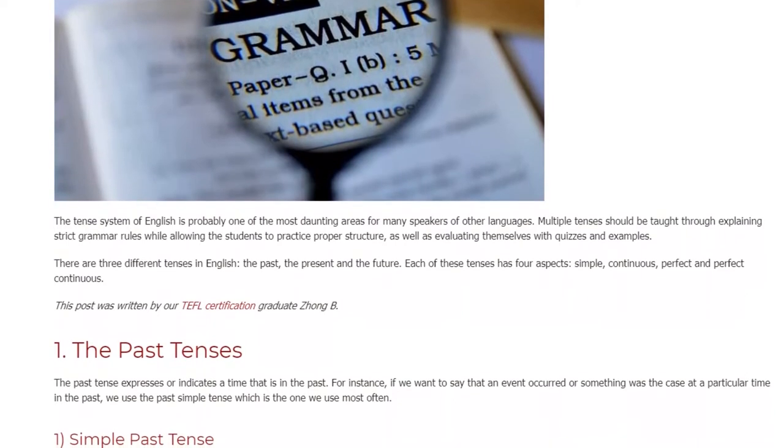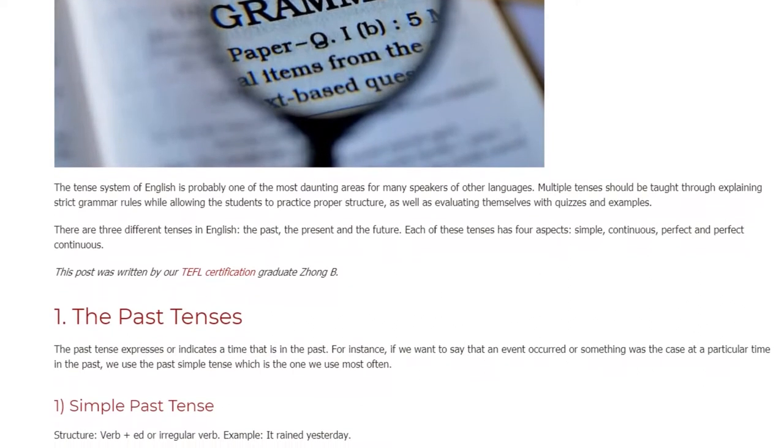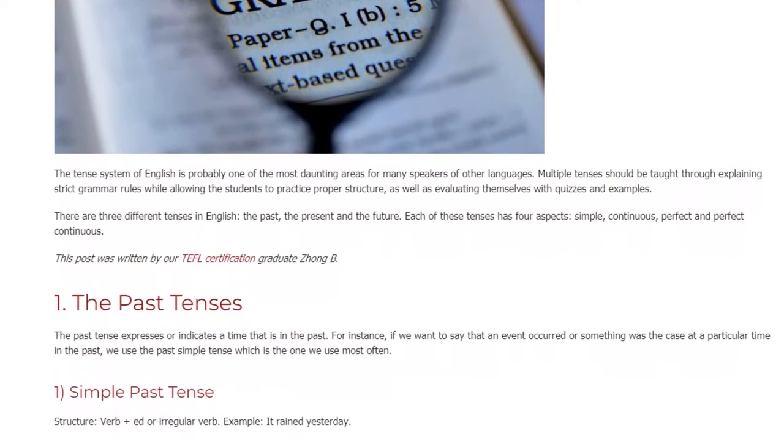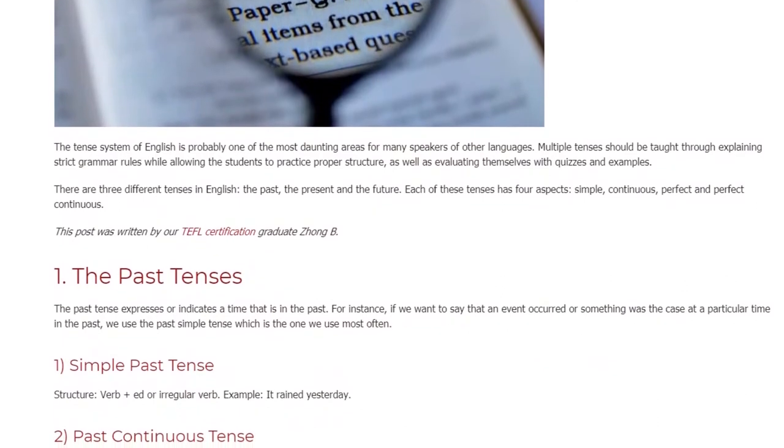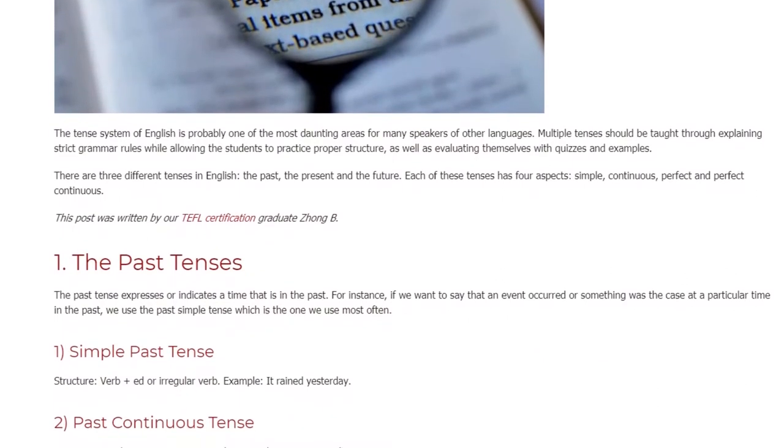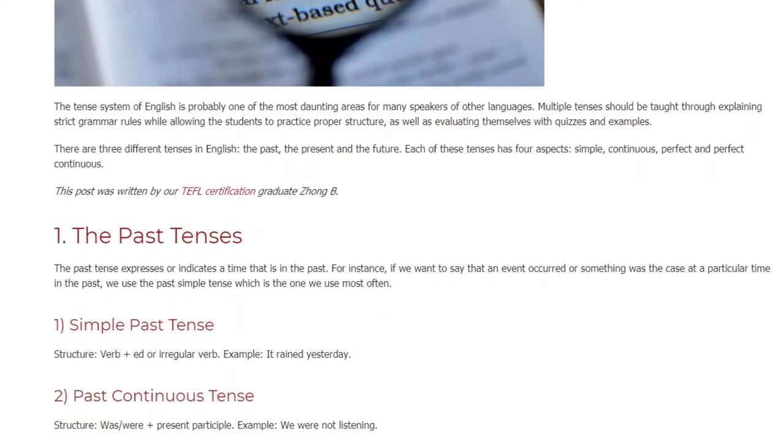1. The Past Tenses. The past tense expresses or indicates a time that is in the past. For instance, if we want to say that an event occurred or something was the case at a particular time in the past, we use the past simple tense which is the one we use most often.